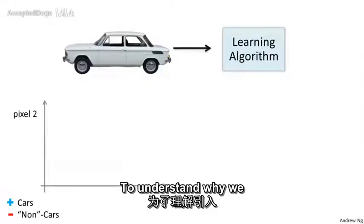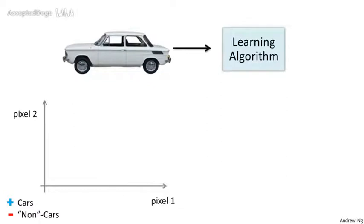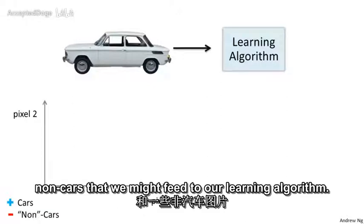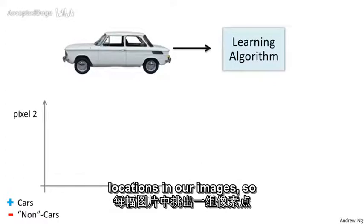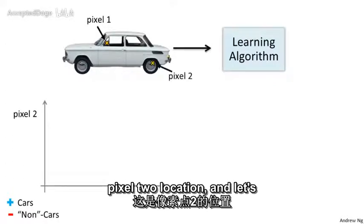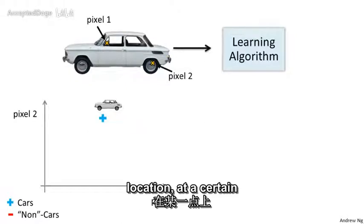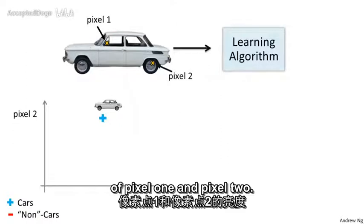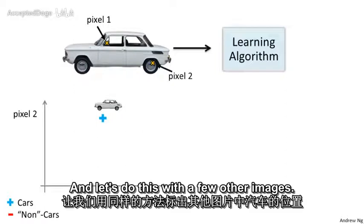To understand why we need nonlinear hypotheses, let's take a look at some of the images of cars and maybe non-cars that we might feed to our learning algorithm. Let's pick a couple pixel locations in our images. So that's pixel one location and pixel two location. And let's plot this car at a certain point, depending on the intensities of pixel one and pixel two. And let's do this a few other images.